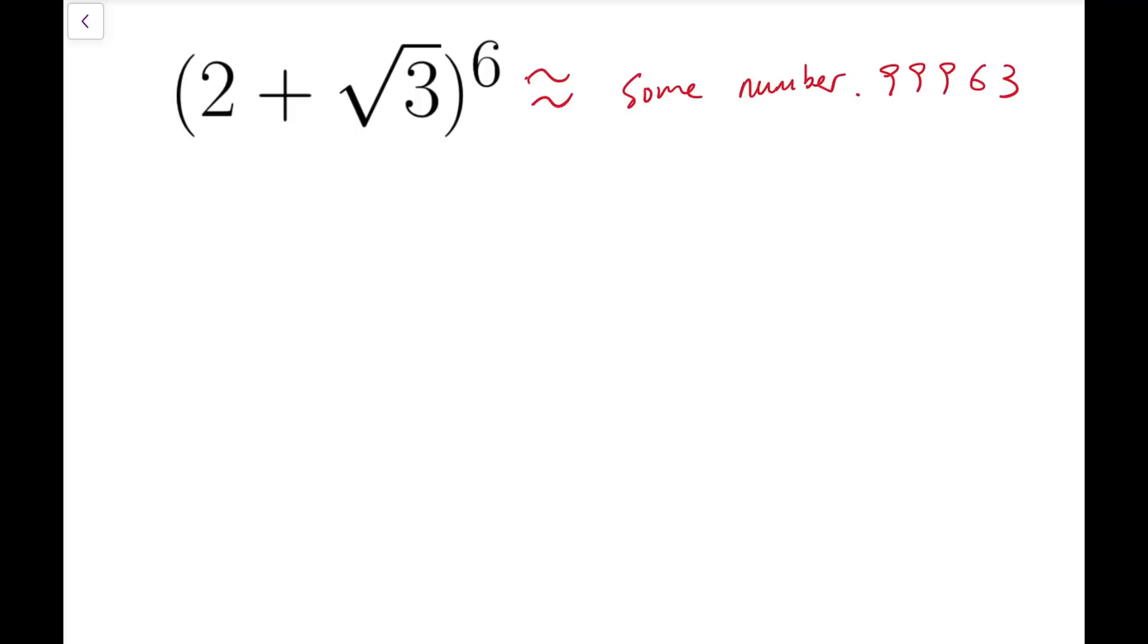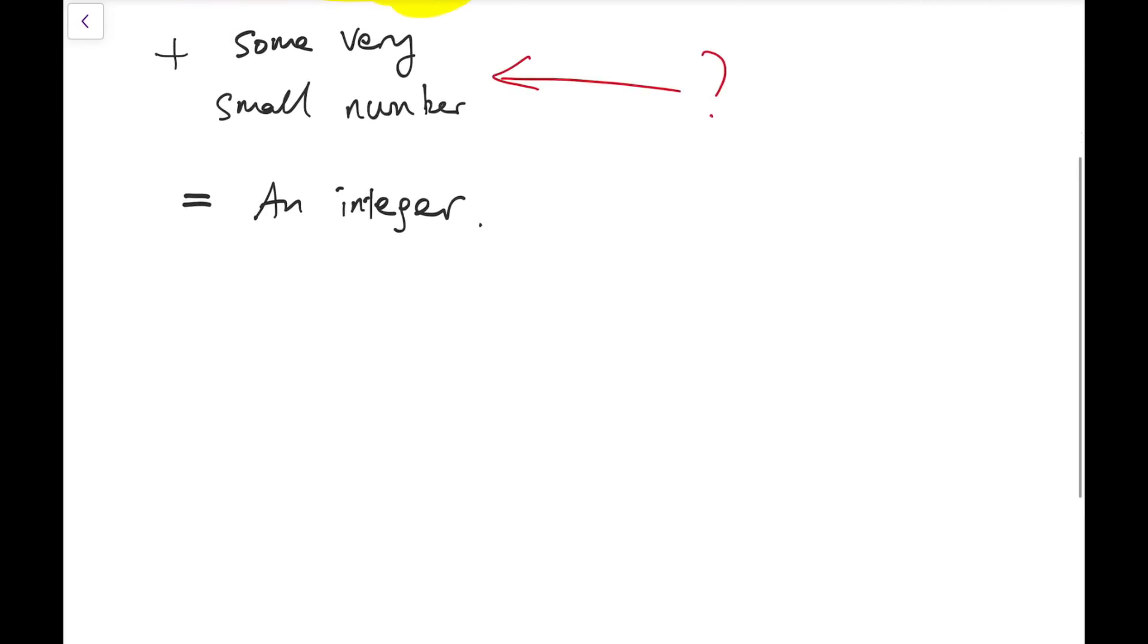So here is the key argument. We are going to show that this number 2 plus square root of 3 all to the power of 6 plus some very small number is going to be equal to an integer. The question is, what number should we pick for this bit? Before deciding that, let's see what we can do on this number. 2 plus square root of 3 all to the power of 6.